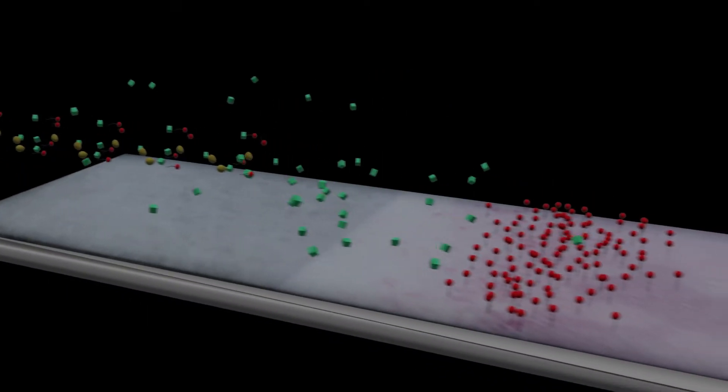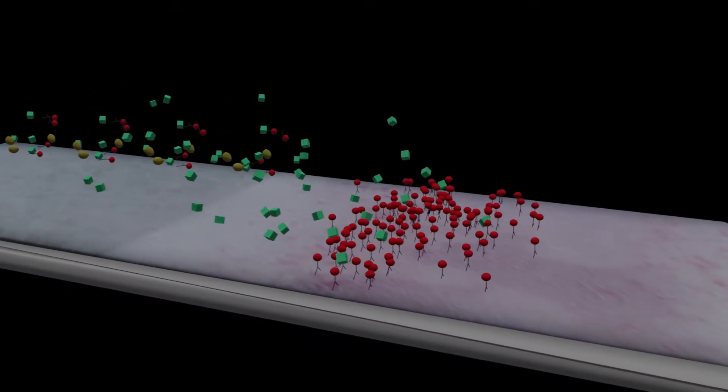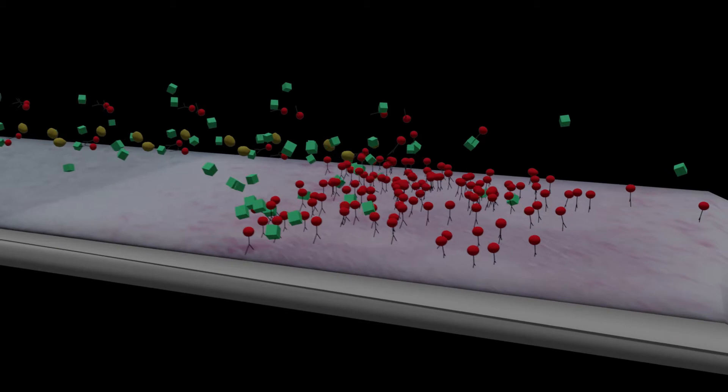The sample is added to the lateral flow device. Liquid drawn up the device picks up the color-labeled antibody striped onto the reagent pad.